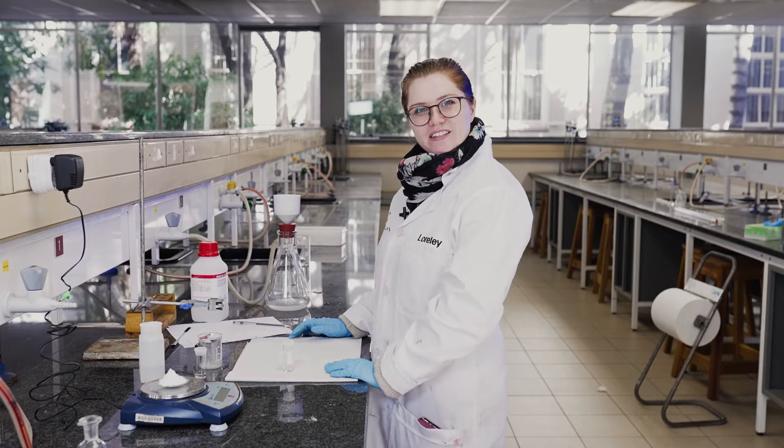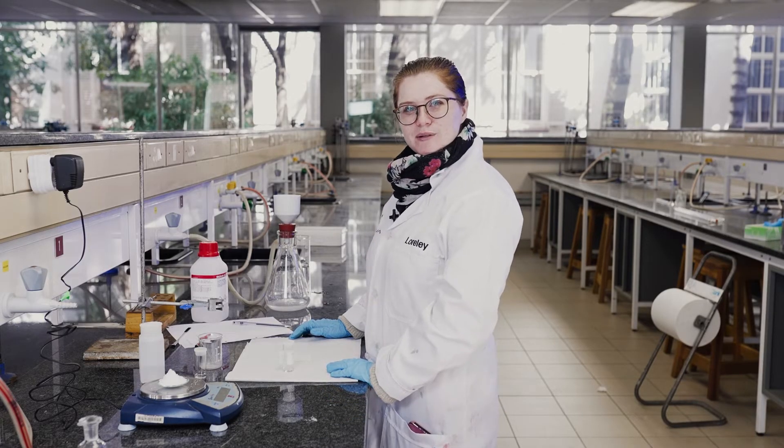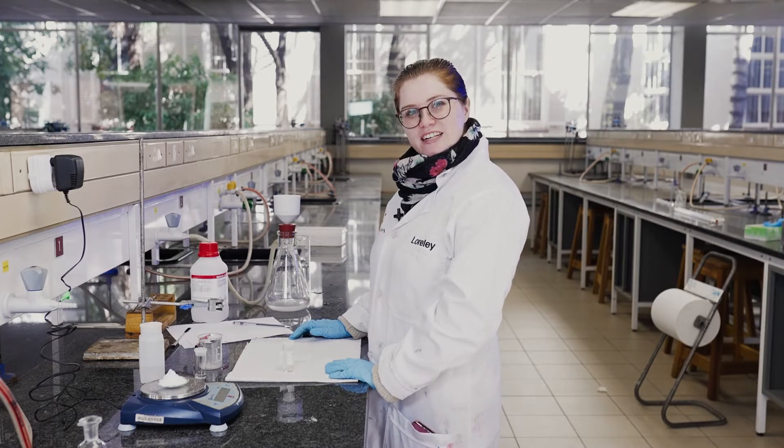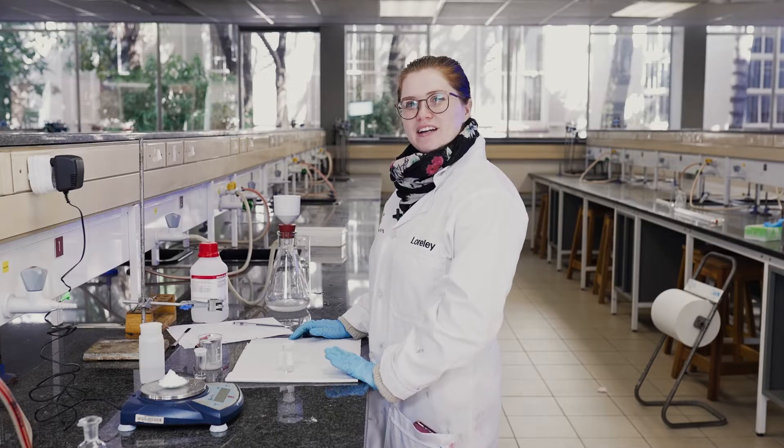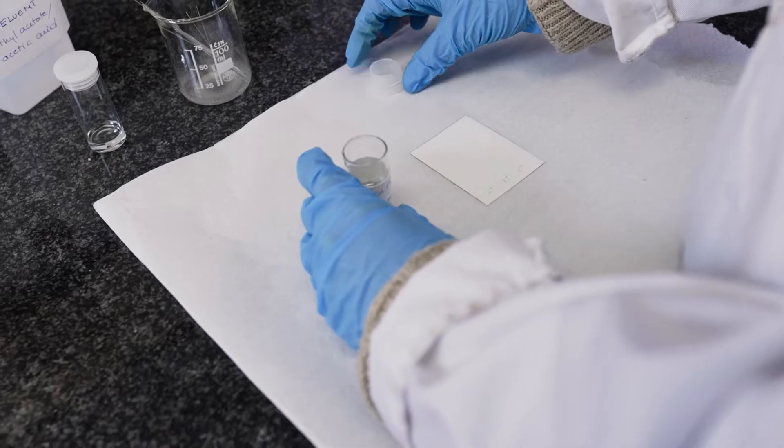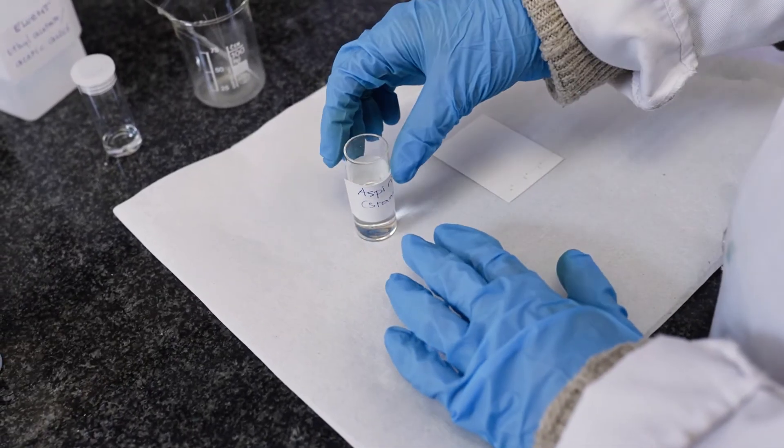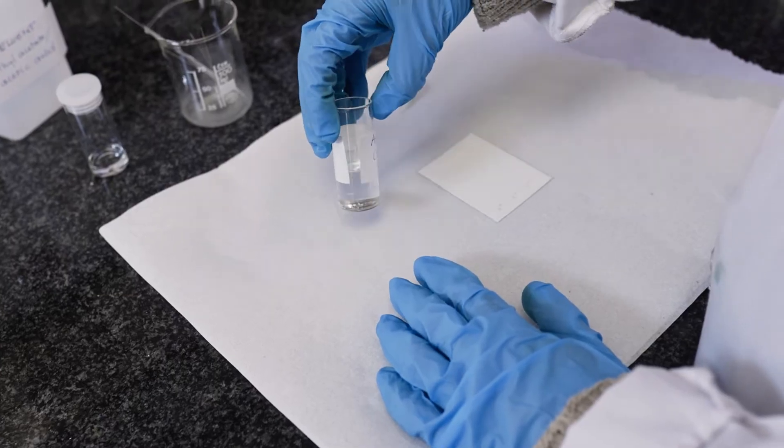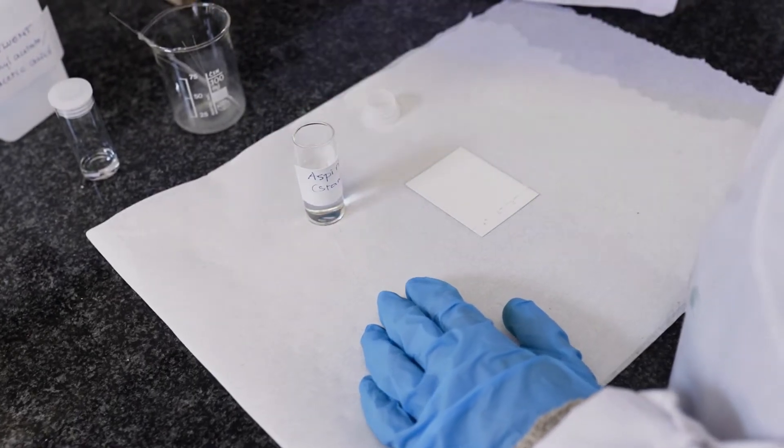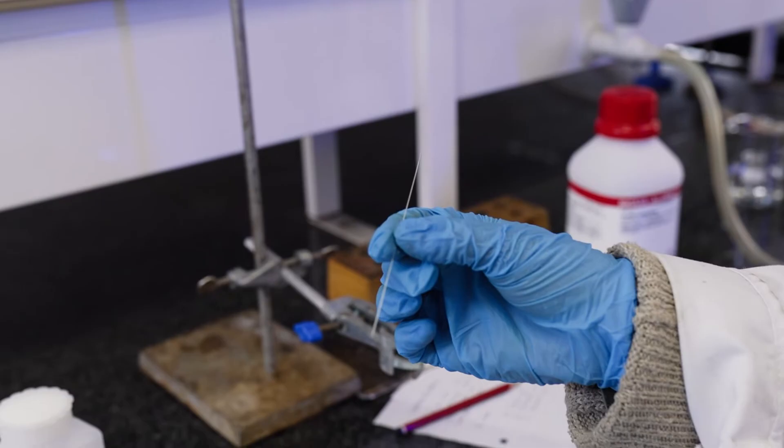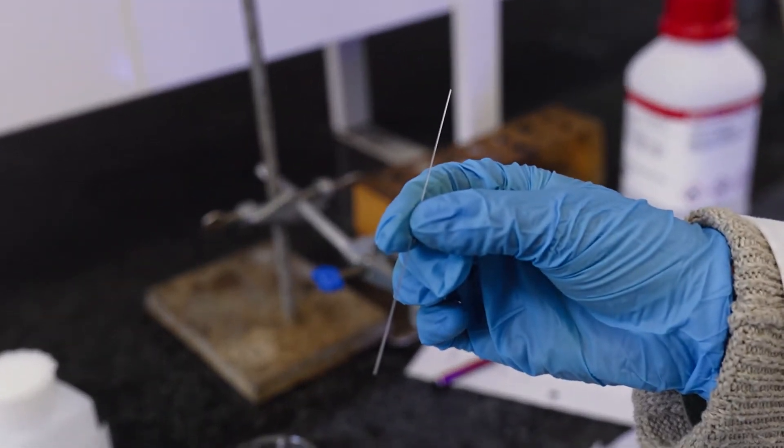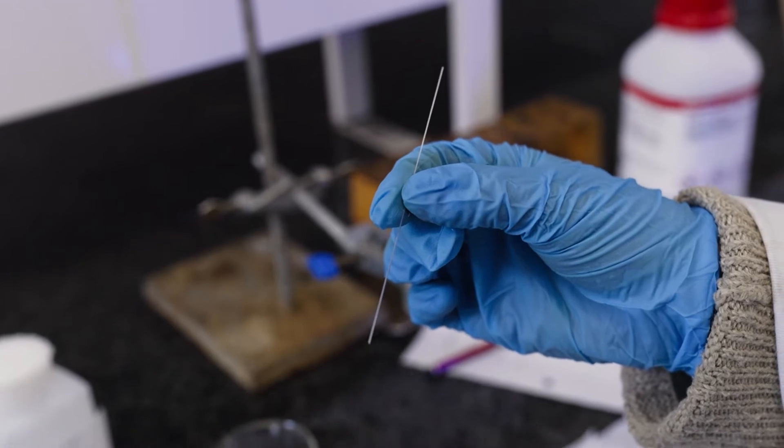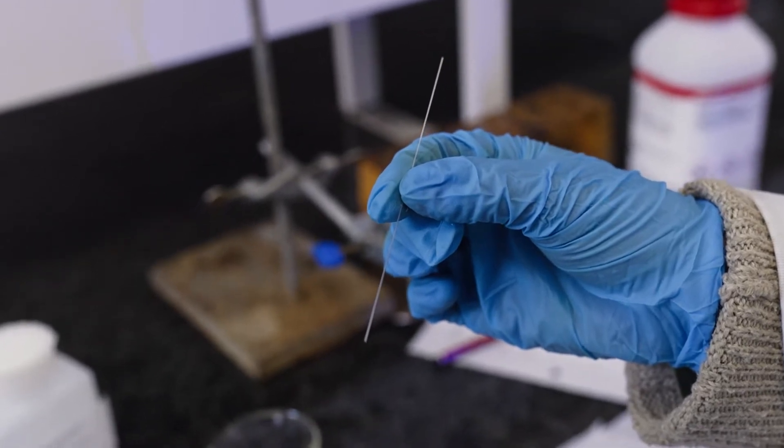So now we need to start spotting our TLC plate with our three reagents: the standard of salicylic acid, our standard of aspirin, and our homemade aspirin. We're going to take our standard of aspirin which has already been prepared for us. We're going to use a capillary tube, so this is a glass tube which is extremely thin to make sure that we only have a really thin spot on our TLC plate.